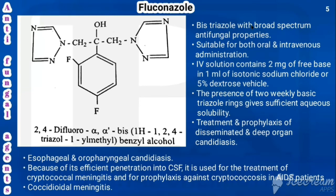Fluconazole is a bis-triazole with broad-spectrum antifungal properties, suitable for both oral and IV administration. The intravenous solution contains 2 mg of free base in 1 mL of isotonic sodium chloride or 5% dextrose. It has two weakly basic triazole rings giving sufficient aqueous solubility. It is used for treatment and prophylaxis of disseminated and deep organ candidiasis, esophageal and oropharyngeal candidiasis. Due to efficient CSF penetration, it is used for cryptococcal meningitis, prophylaxis against Cryptococcus in AIDS patients, and coccidioidal meningitis.